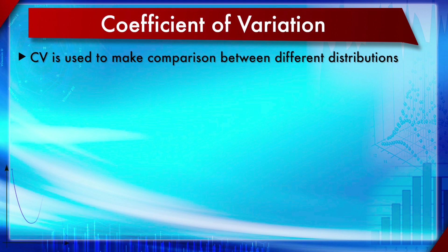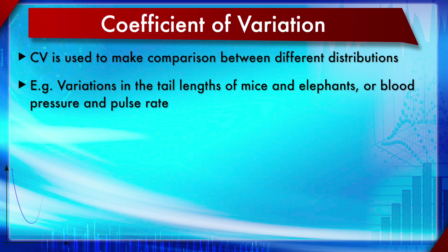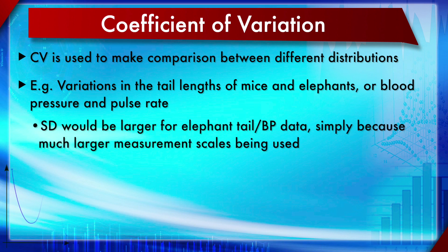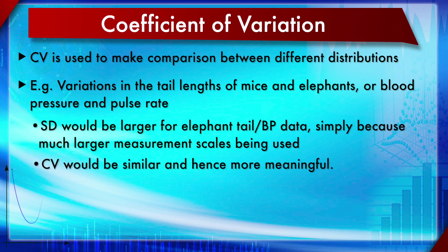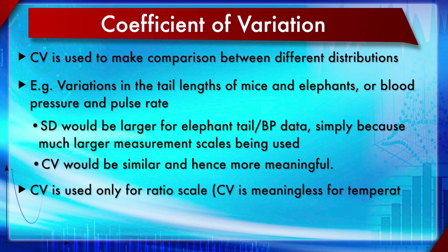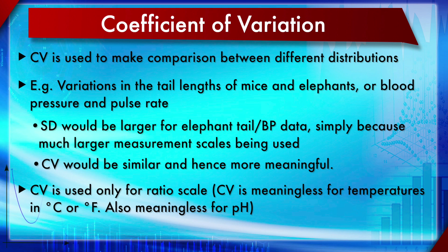The Coefficient of Variation is used to make comparisons between different distributions. For example, if you want to compare blood pressure data with pulse rate data, the standard deviation would be larger for the BP data simply because much larger measurement scales are used. CV would be similar and hence more meaningful for comparing these two distributions. Importantly, CV is only applicable to ratio scale data — it is meaningless for interval or ordinal scales, such as temperature in degrees Celsius or Fahrenheit, but valid in Kelvin. It is also meaningless for pH.